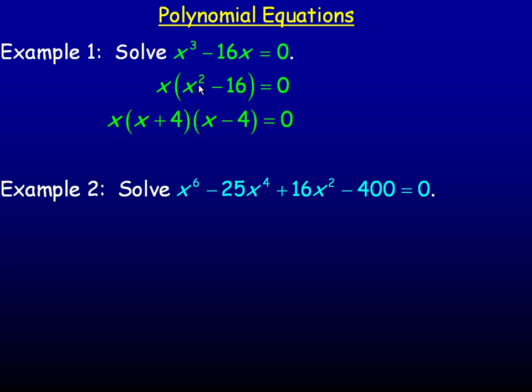We can see that the x squared minus 16 will factor into x plus 4 and x minus 4. That is the difference of two perfect squares. And now we have three different linear factors so we can set each of these to 0.